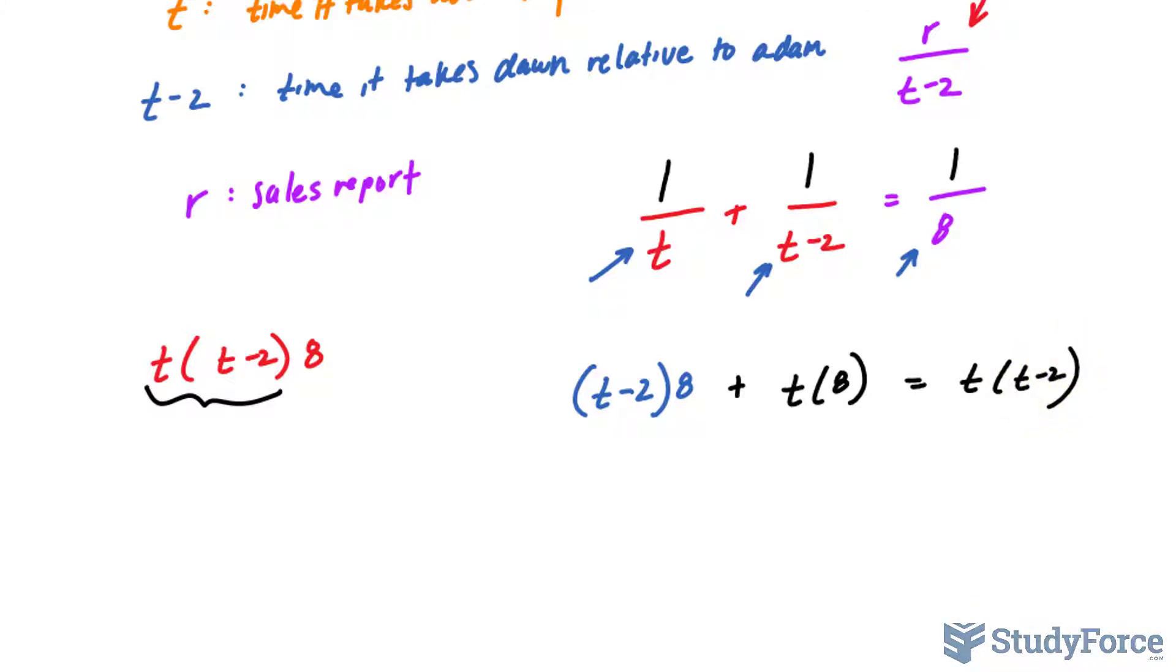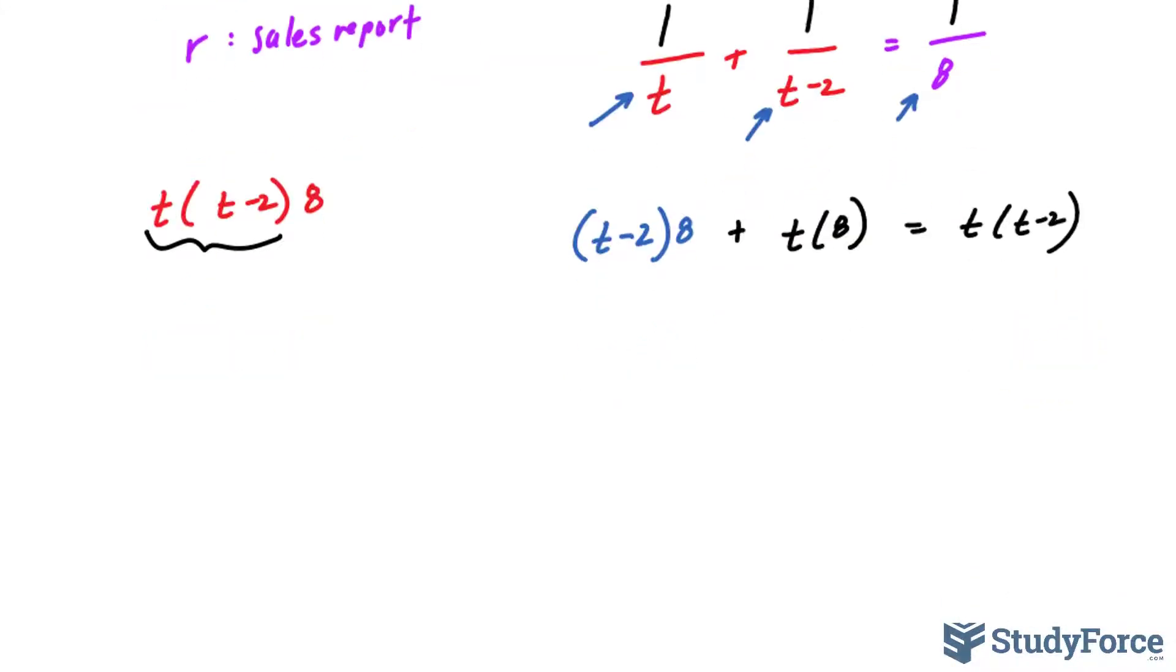Now this still doesn't look like a quadratic, but what's interesting is that if we expand here and here and here, then rearrange, you'll end up with a quadratic. Here's what I mean: eight times t is 8t minus 16 plus 8t is equal to t squared minus 2t.